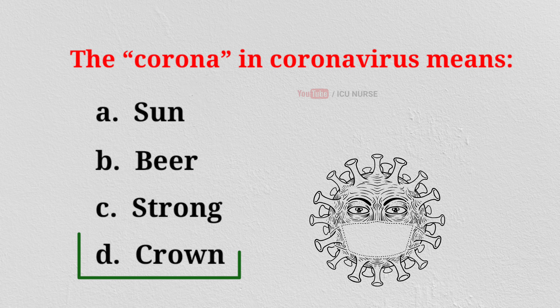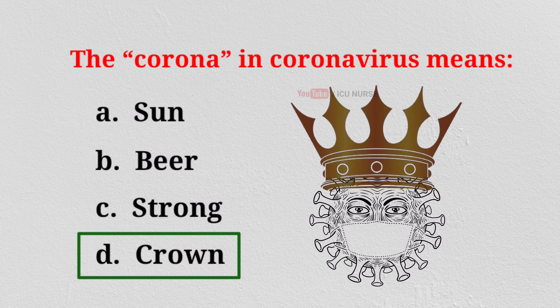D. Crown. Spike proteins on coronavirus's outer covering give them the appearance of a crown or halo.